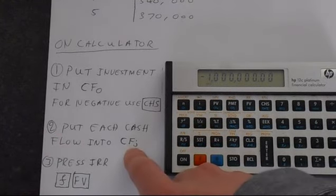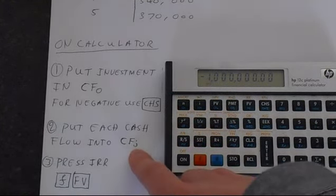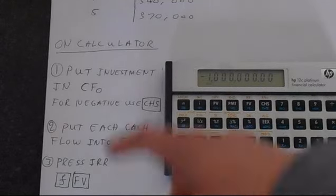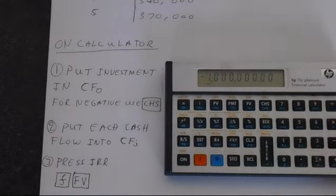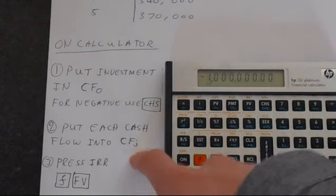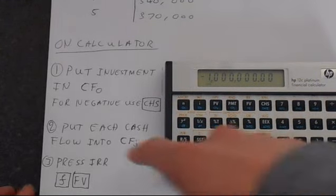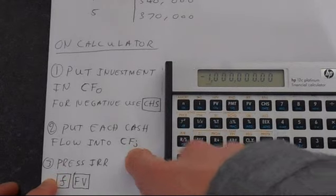We're going to put these in cash flow J. So that J is like your counting number. So J is going to be one, two, three, four, and five. That's going to correspond to the year. So we're going to have cash flow one, cash flow two, cash flow three, and that will go into all of the cash flow memories.